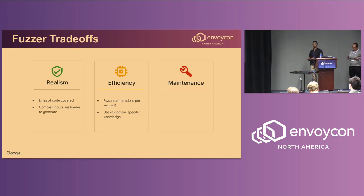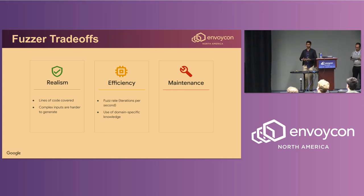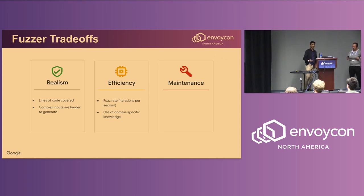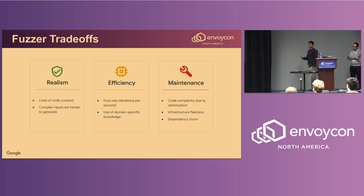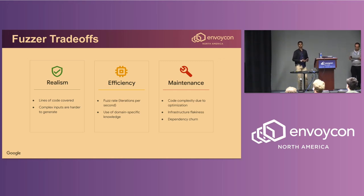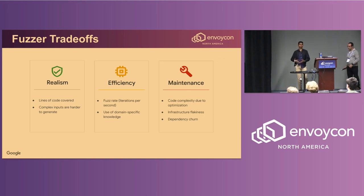Efficiency is the fuzz rate — how many times per second the fuzzing engine can generate a new value and feed it to your instrumented code. If you don't have high efficiency, the fuzzing engine doesn't have time to explore new input space. You can improve efficiency by adding domain-specific knowledge, such as config validation checks or short-circuiting in your fuzzer to reject uninteresting inputs early. However, adding all these checks leads to higher maintenance burden — your fuzzer becomes scattered with tiny checks, and whenever you change your library under test, you also need to update your fuzzer.